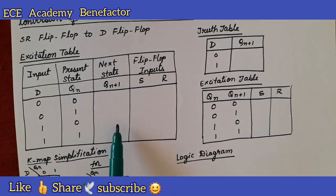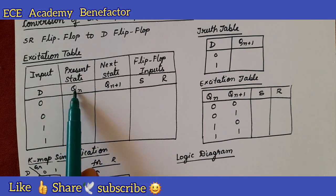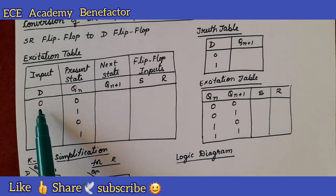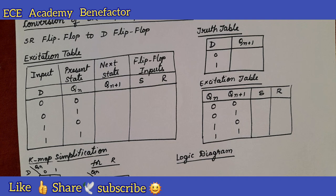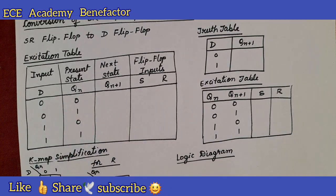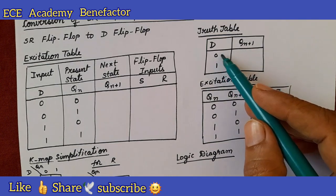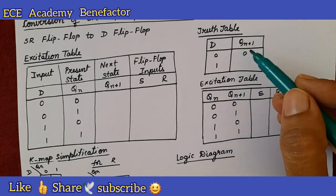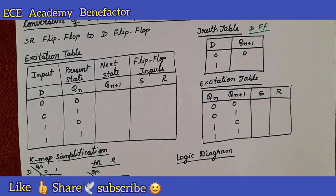To fill this excitation table we need the first two columns: D and Q_n. For these two variables we can write four possible binary combinations: 0 0, 0 1, 1 0, 1 1. To fill the next state column we need to know the truth table of the D flip flop. When D is 0, Q_{n+1} is 0, and when D is 1, Q_{n+1} is 1. The D flip flop is easy to remember — whatever is the D input, the same is Q_{n+1}.